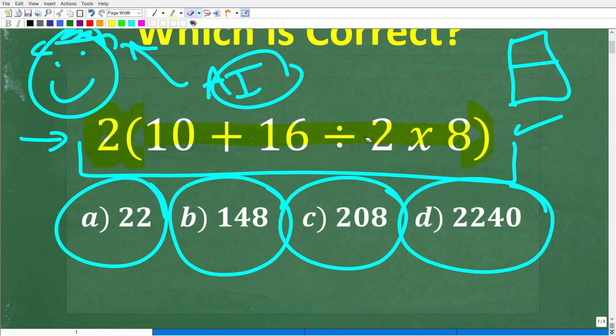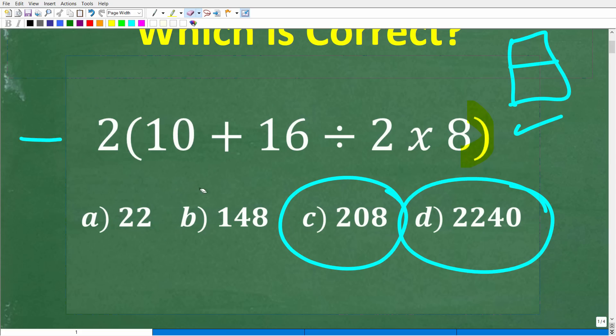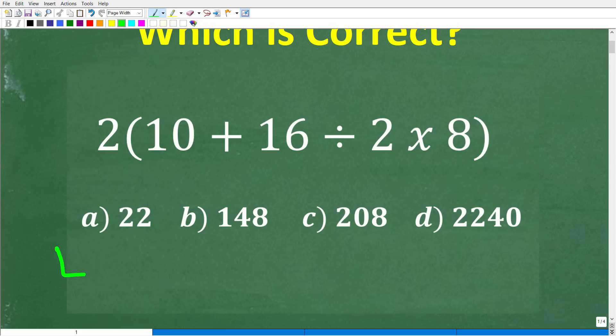So let me go ahead and show you the problem one more time. We're going to erase everything so you don't get distracted. Now, the right answer is one of these choices right here. So if you are totally lost, go ahead and just take a guess. But what we have here is 2, this 2 outside of a parenthesis, this means multiplication. So this is 2 times parenthesis, 10 plus 16 divided by 2 times 8, and parenthesis.